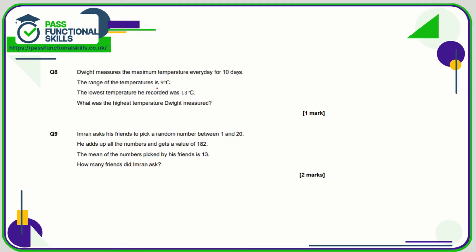Question eight is a non-calculator question. Dwight measures the maximum temperature every day for 10 days and the range is 9, meaning the difference between the smallest and highest temperature is 9. So if the lowest was 13, then the highest is going to be 13 plus 9, which is 22 degrees Celsius.